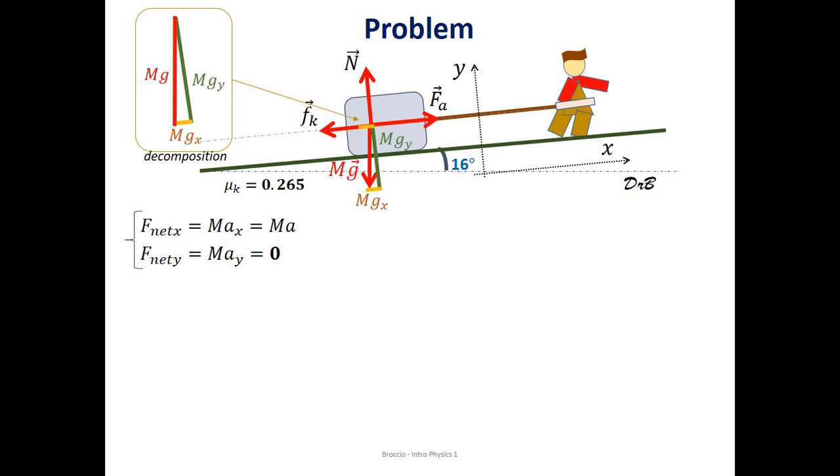So, based on our free body diagram, we can write applied force minus friction minus the x component of mg, which is mg sine of the 16 degree angle. The mg sine 16 degrees is because the yellow segment in the triangle is the opposite to the angle 16 degrees in the triangle.